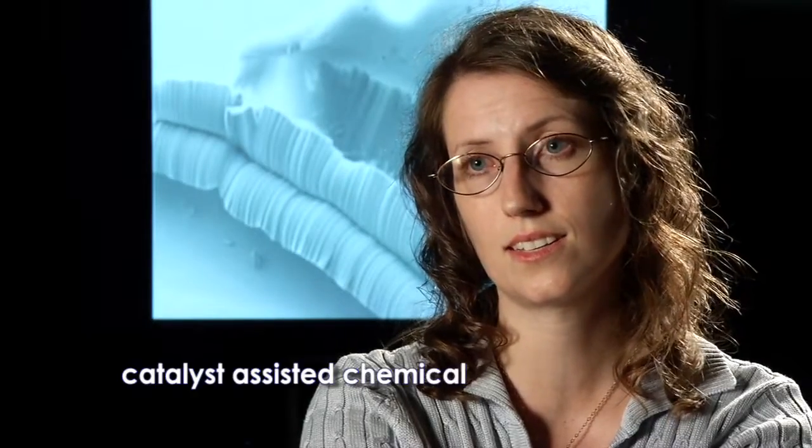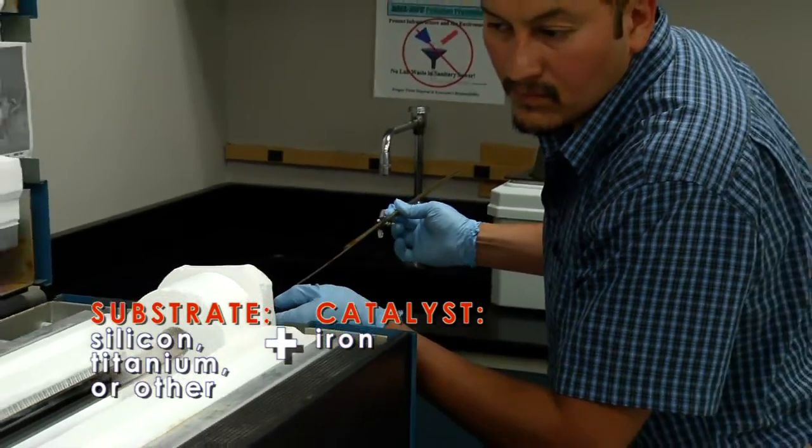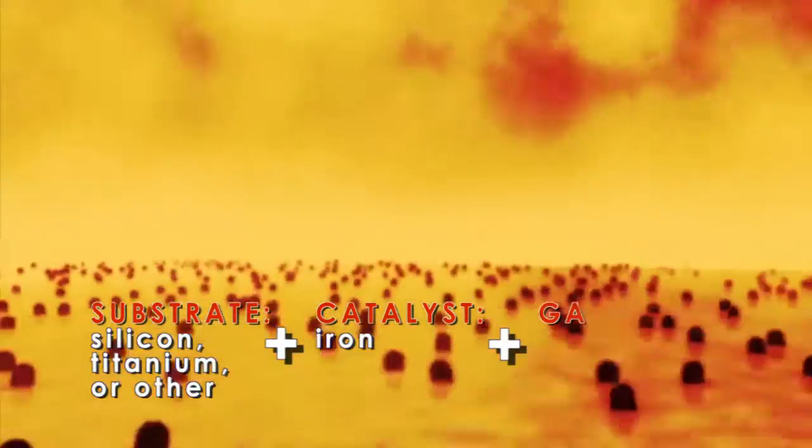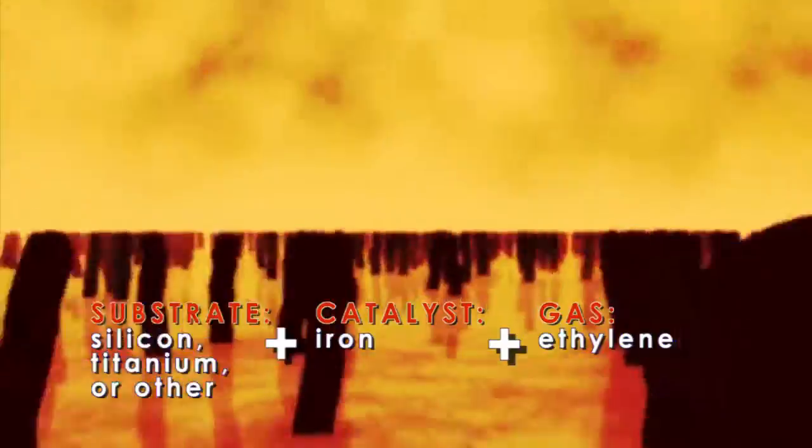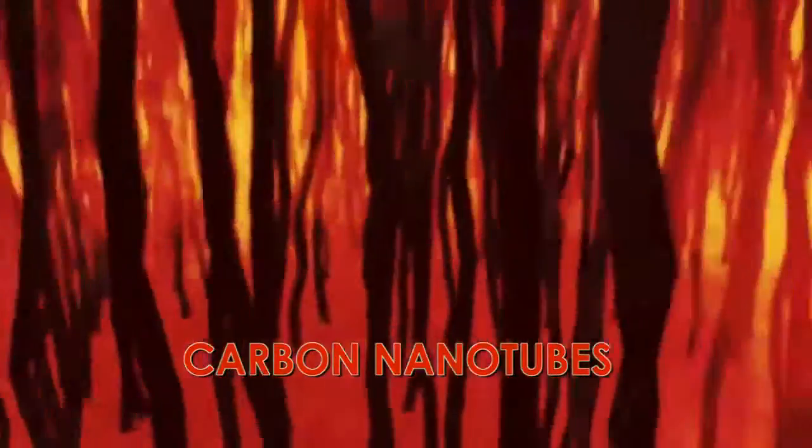The method that we use is called catalyst-assisted chemical vapor deposition, and that grows carbon nanotubes on a substrate. Put the substrate in this tube. You heat the tube up to about 750 degrees centigrade, and you flow a gas, and the gas has carbon in it. Because of the catalyst layer, you start to assemble these tubes. Carbon takes a very specific form as it grows.